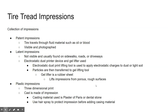If a tire tread is patent — such as if it ran through a pool of oil or blood — you can photograph it with a high-resolution camera. If it is a latent impression, normally found on sidewalks, roads, or driveways, you can use an electrostatic dust lifter or gel lifting. For plastic impressions, you would make a 3D impression the same way you would for foot impressions, using either plaster of Paris or dental stone and hairspray to protect the impression before adding casting material.